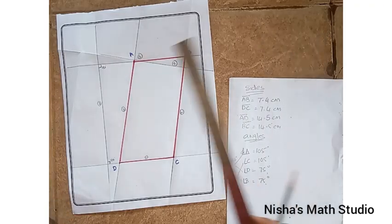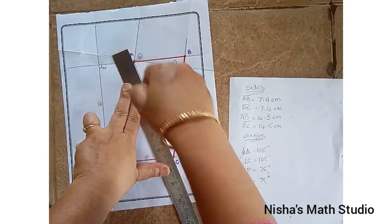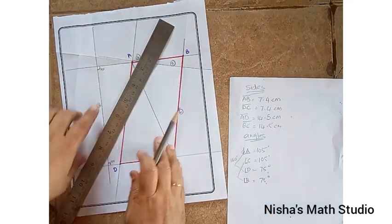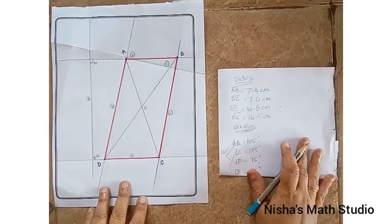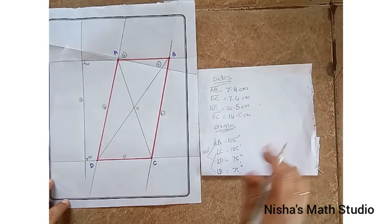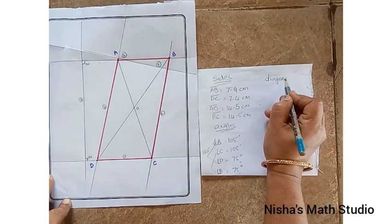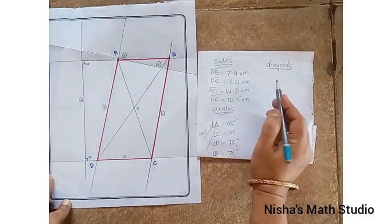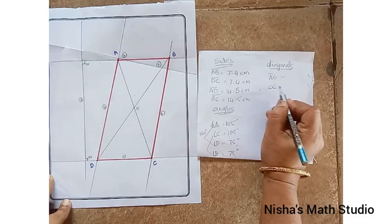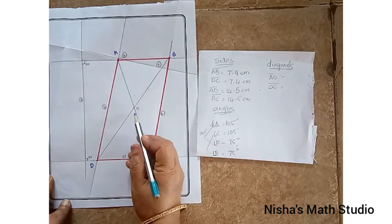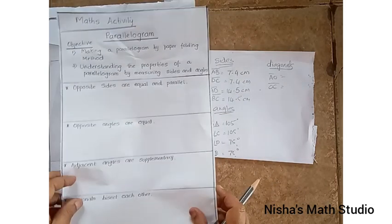The last property which we need to check is the diagonals bisect each other. So, draw the diagonals. Connecting the opposite vertices, draw the diagonals. Now, this part I will leave it to you. That is, checking the diagonals. Measure it and write it. Measure AO, write it. And, you measure OC and write, which should come same. Similarly, measure OD and OB, which should come same.